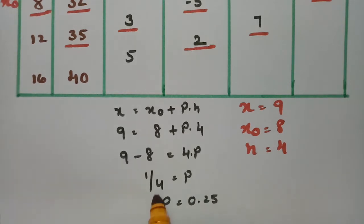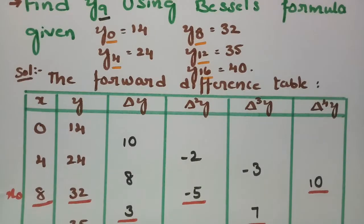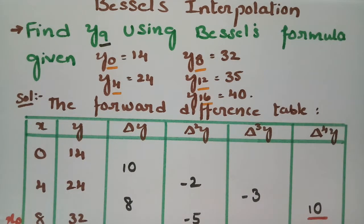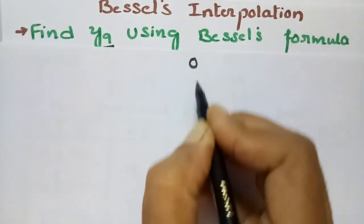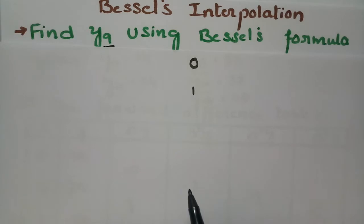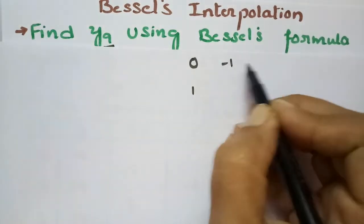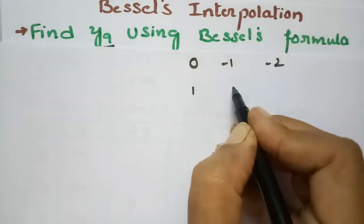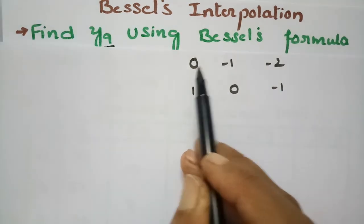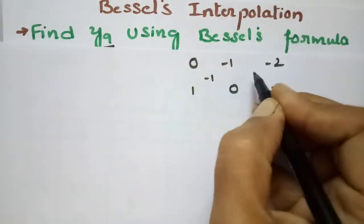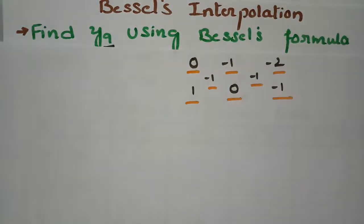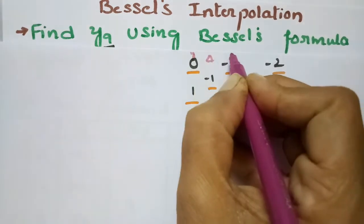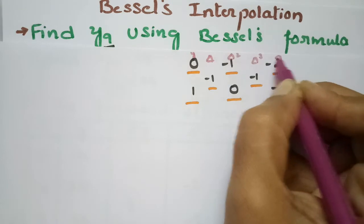After getting p = 0.25, we substitute all values into Bessel's formula. There is an easy way to remember Bessel's formula. We start with 0 and 1, writing in decreasing order: 0, −1, −2; and 1, 0, −1. In between we write −½. We select double, single, double, single, and double values. These correspond to y values, first differences, second differences, third differences, and fourth differences.